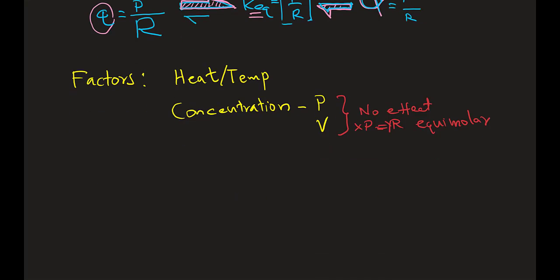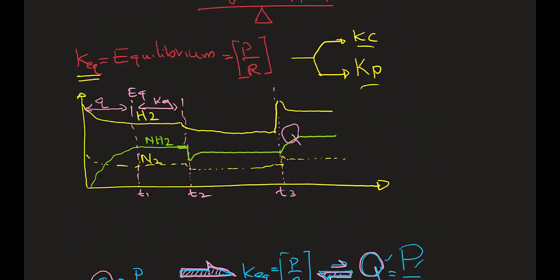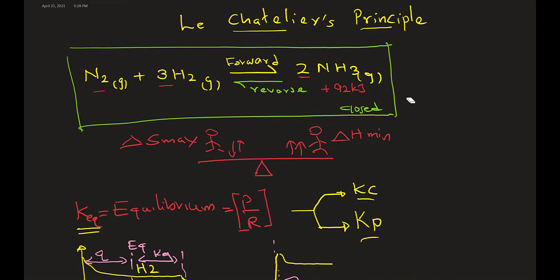Now, we want to address this one based on Le Chatelier. Let's change this one a little bit better. Let's say my heat, exothermic, that's 92 or heat, heat product.